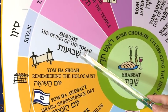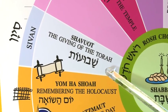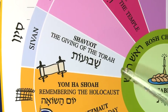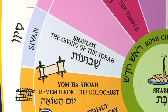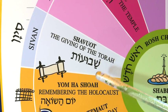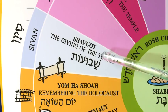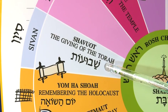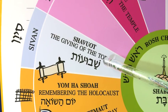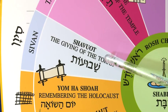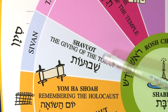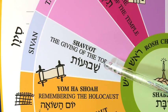Then we have Shavuot, which is one of our pilgrimage holidays — as is Passover. So we have our three pilgrimage holidays: Passover, Sukkot, and Shavuot. And we have the month of Sivan, which is Shavuot, the giving of the Torah. That is the holiday where we received our commandments and our Torah from Mount Sinai, and how the gift of the Torah is called Matanah HaTorah — the present of the Torah.